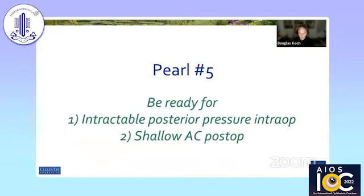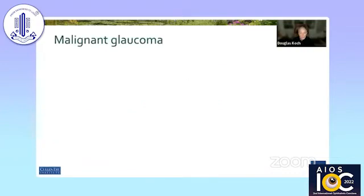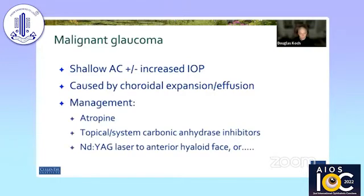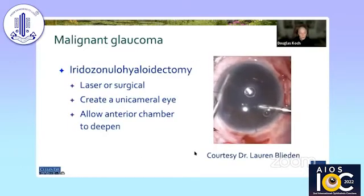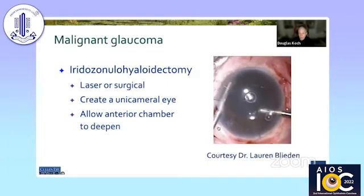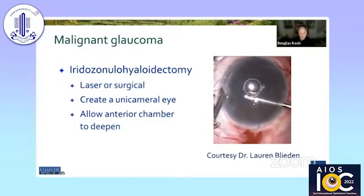Post-operatively, you must be prepared for intractable posterior pressure and a shallow anterior chamber depth. Malignant glaucoma can occur in these eyes with a shallow anterior chamber and increased pressure, caused by choroidal expansion or effusion. Management options include atropine, carbonic anhydrase inhibitors, YAG laser to the hyaloid face, or an iridozonulohyaloidectomy to create a unicameral eye, as seen here.